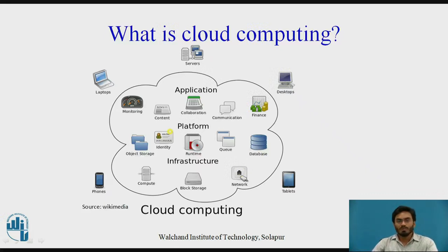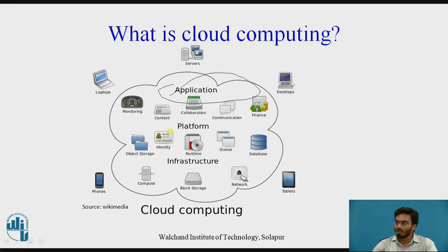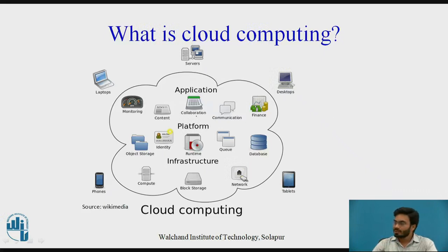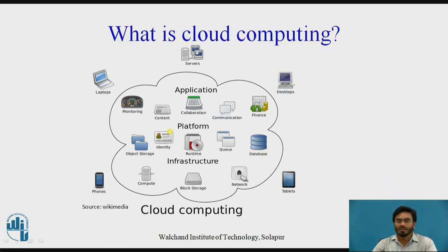In a broad overview, the first layer is called the application layer, where we generally focus on devices involving monitoring, collaboration, communication, and finance. In the second layer we have object storage, identity, runtime, queue, and databases — essentially whatever data you are pushing onto the cloud servers.